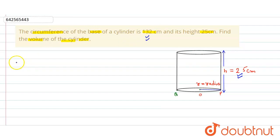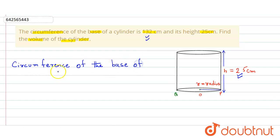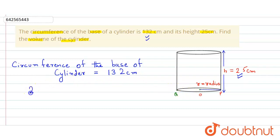It is given that the circumference of the base of the cylinder is equal to 132 centimeters. We know the formula for the circumference of the base of the cylinder — since the base is a circle, it will be 2π into r, where r is the radius. So that is equal to 132, and we get r equal to 132 divided by 2π.